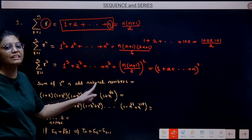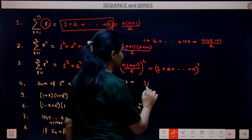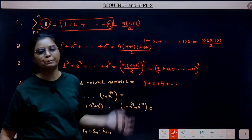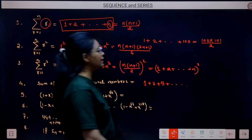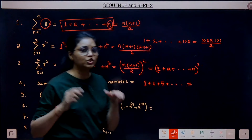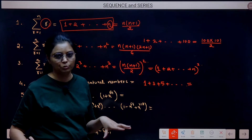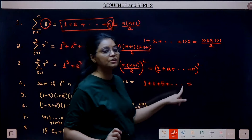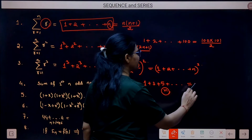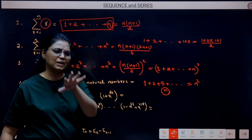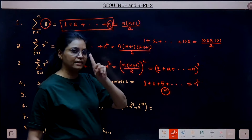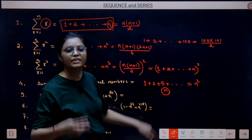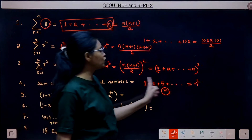Fourth: sum of first n odd natural numbers. The odd numbers form an AP; you can compute their sum using AP formula. But keep this handy: sum of the first n odd natural numbers = n². You can verify: 1 = 1²; 1 + 3 = 4 = 2²; 1 + 3 + 5 = 9 = 3². Use this directly.